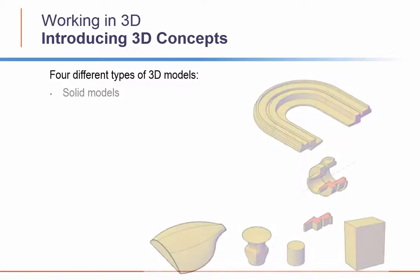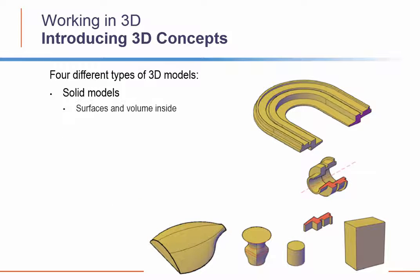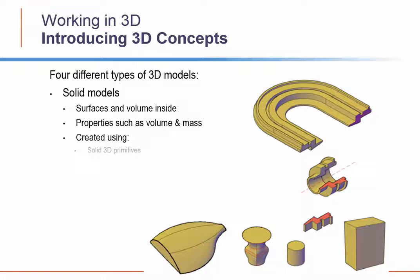Solid models consist of both the surfaces and the volume inside those surfaces. A solid model is a 3D representation that has such properties as mass, volume, center of gravity, and moments of inertia. You create solid models either by using specific solid modeling commands to create basic shapes such as boxes, cones, cylinders, spheres, and so on, or by sweeping, lofting, or extruding closed 2D objects.